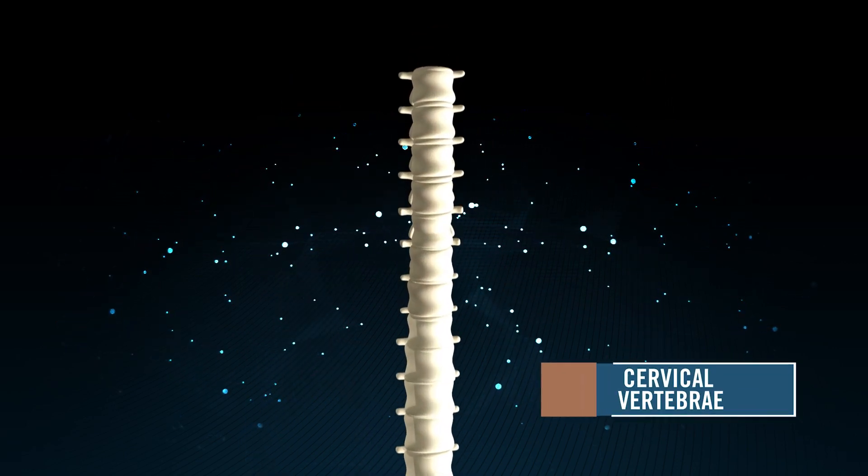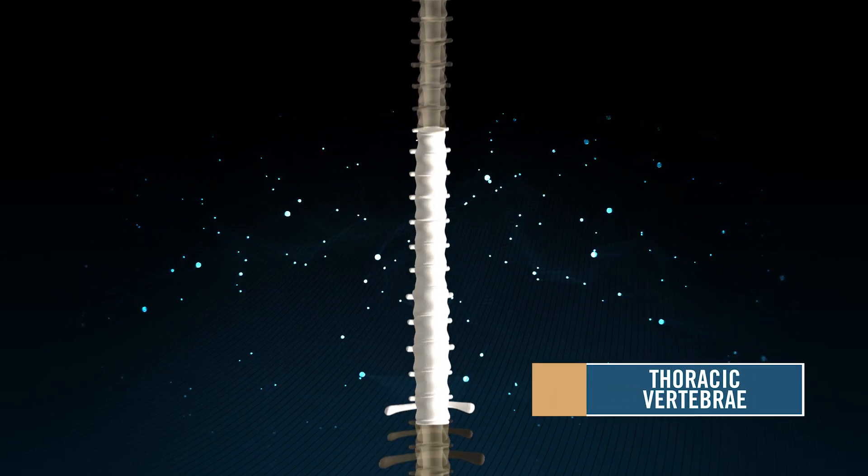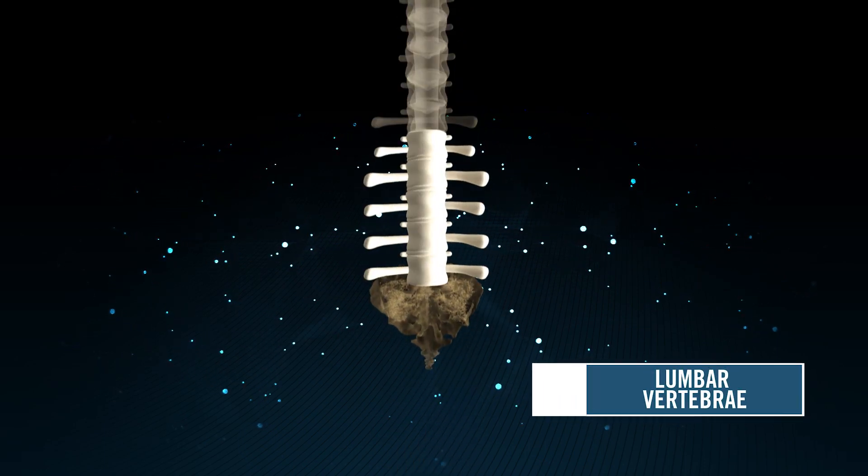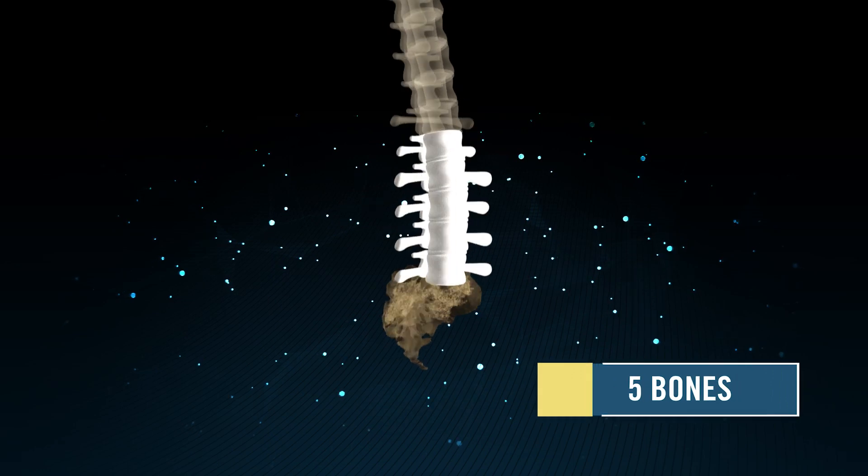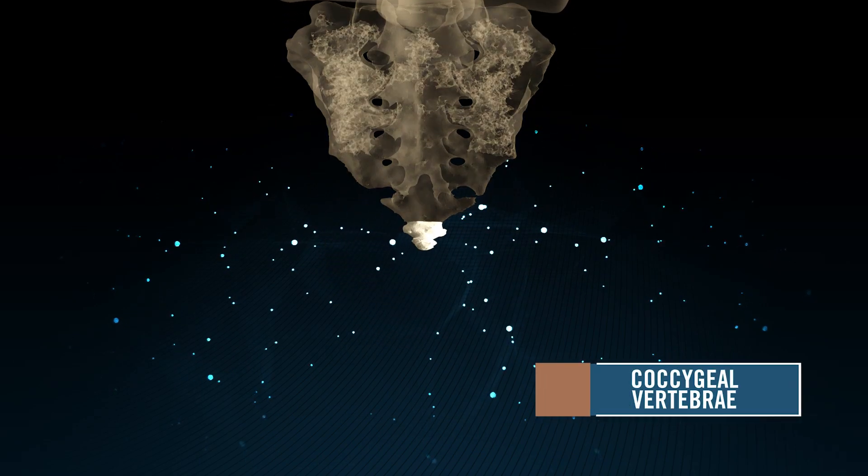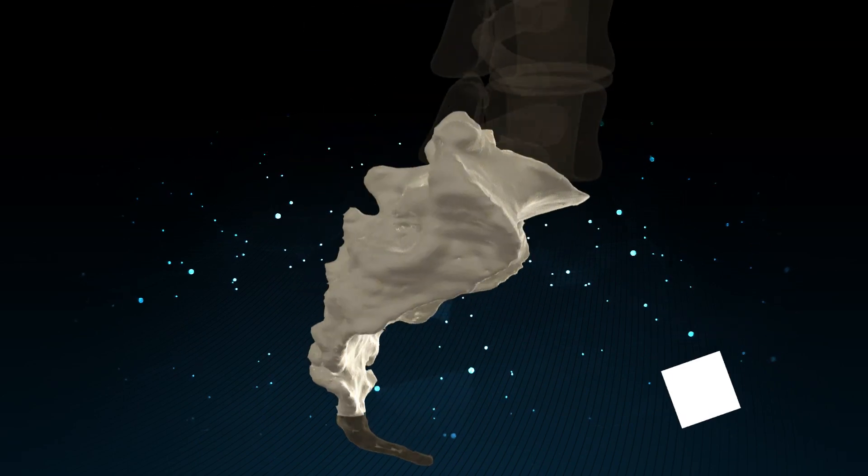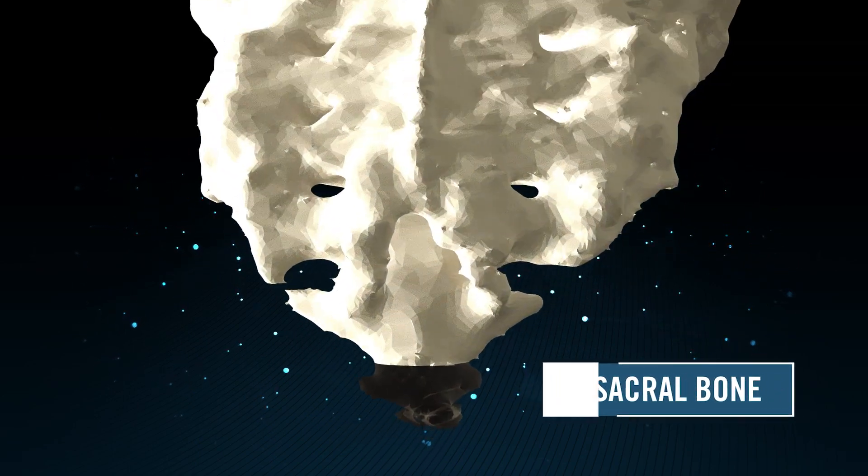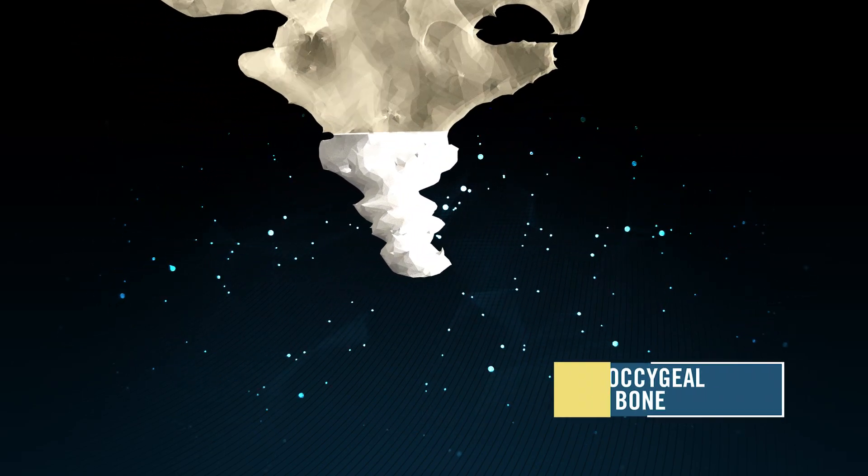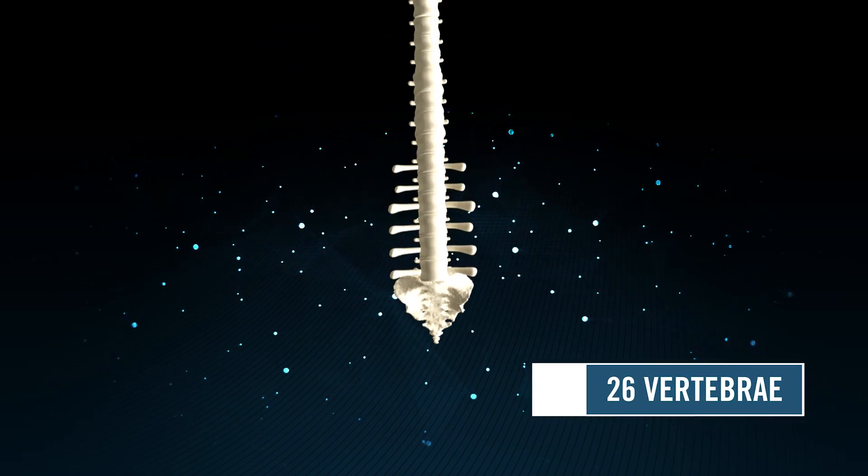Cervical vertebrae consists of seven bones, thoracic vertebrae consists of 12 bones, lumbar vertebrae consists of five bones, sacral vertebrae consists of five bones, coccygeal vertebrae consists of four bones. The five sacral bones are fused together as a single bone. The four coccygeal bones are fused together as another single bone, hence having a total of 26 vertebrae.